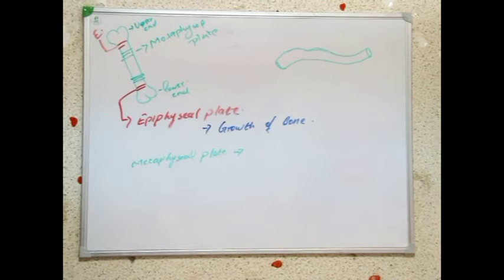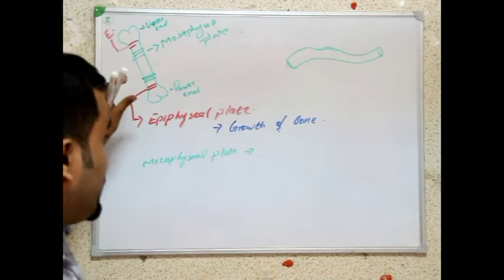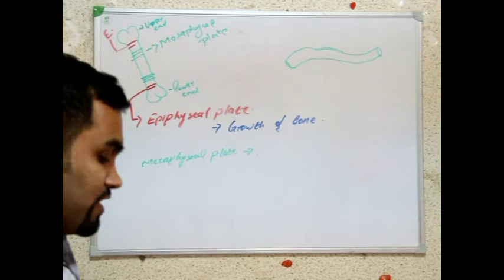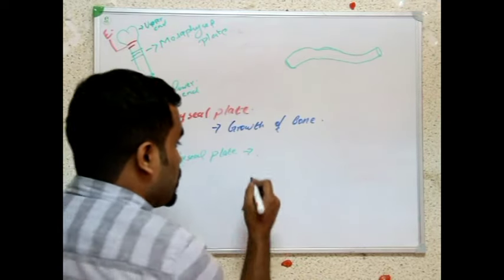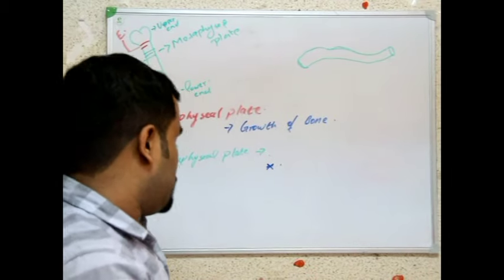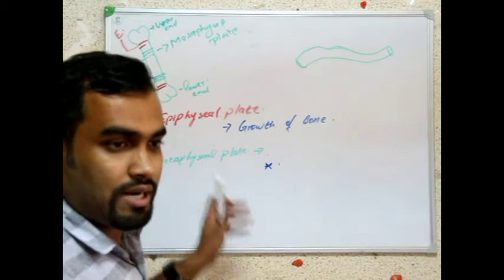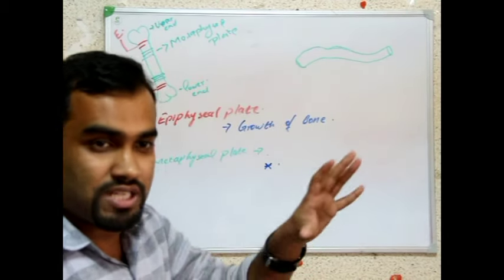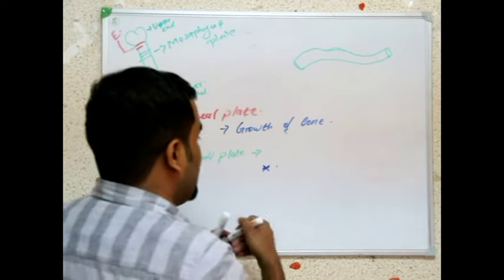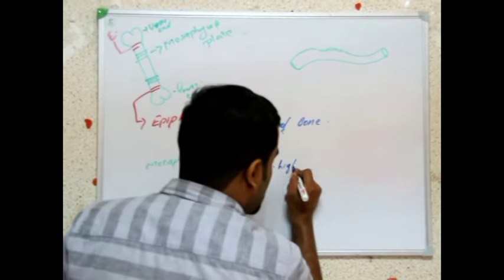You can see many MCQs regarding this place. What is its importance? First of all, the vascularization of the bone occurs here — all blood vessels are present in the metaphyseal plate. It is highly vascularized.